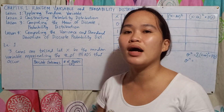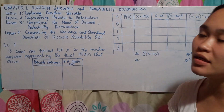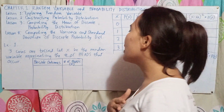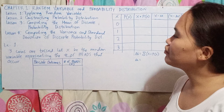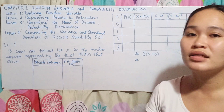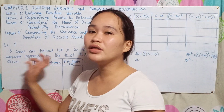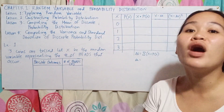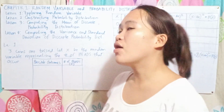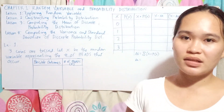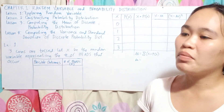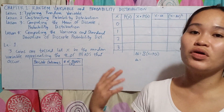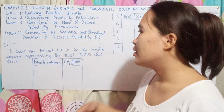We have Example 1, which was discussed in the conference. Three coins are tossed. Let X be the random variable representing the number of heads that occur. So, tatlo ka coins ang imuhang i-itsa. Unsa ang possible outcome? Take note, pag mag-itsa ka og coins, pag abot niya sa lupa, either hari or patay iyang outcome — head and tail.